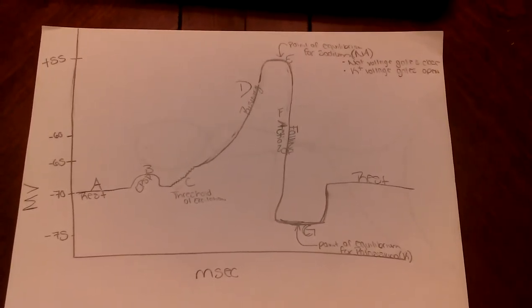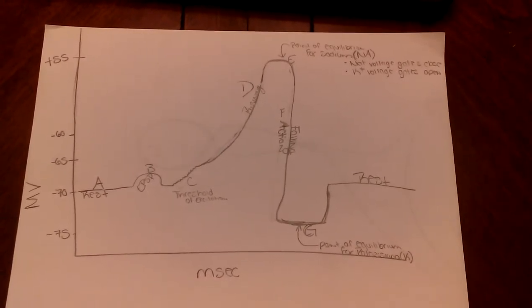Once the action potential starts, there is a rising phase, a falling phase, and an overshoot phase.